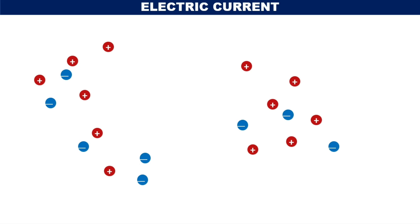Simply, we can define: electric current is the measure of the rate of flow of charges. The electric current will be due to the motion of both positive and negative charges.